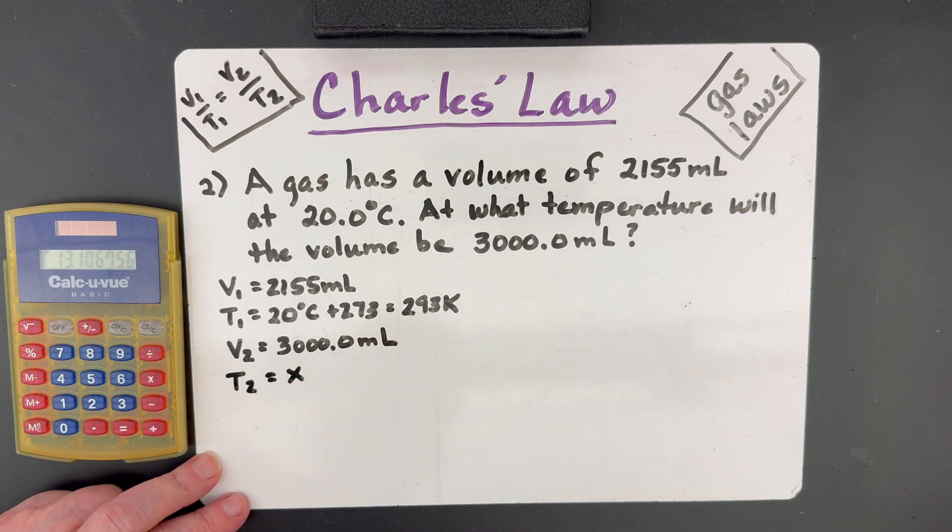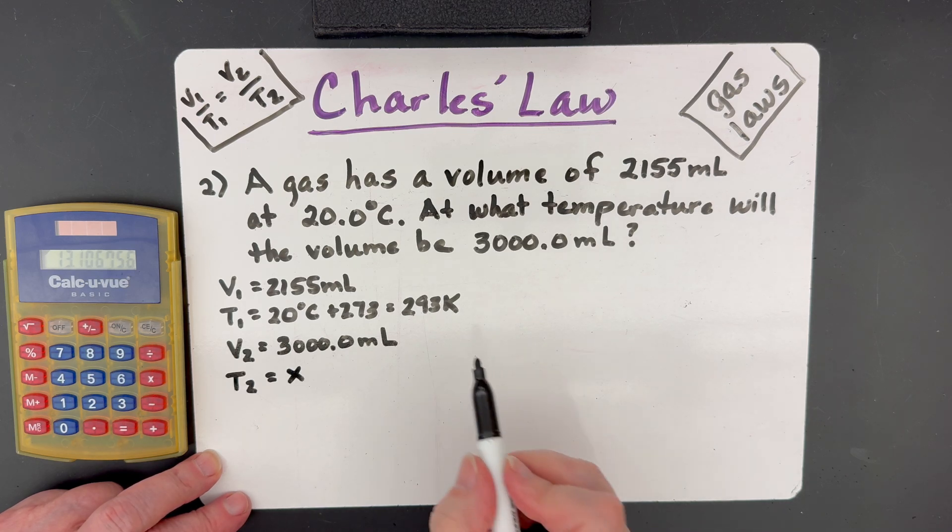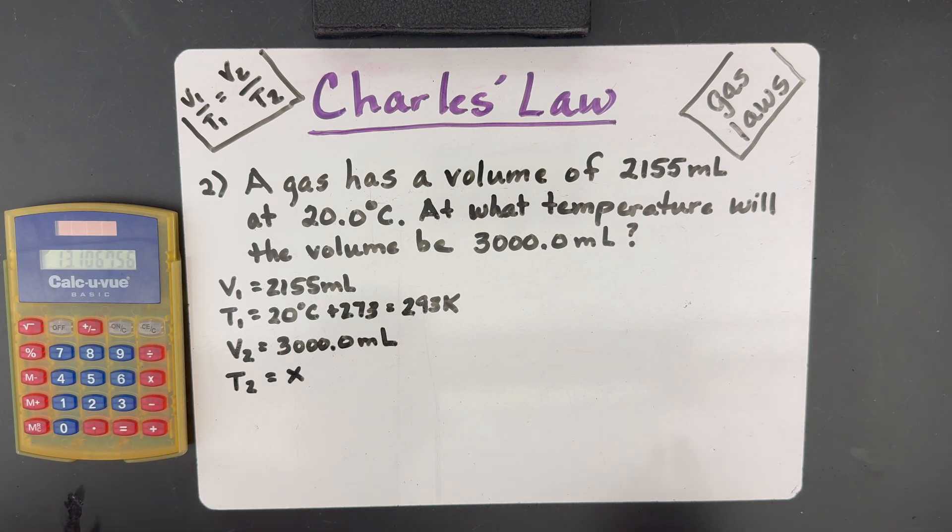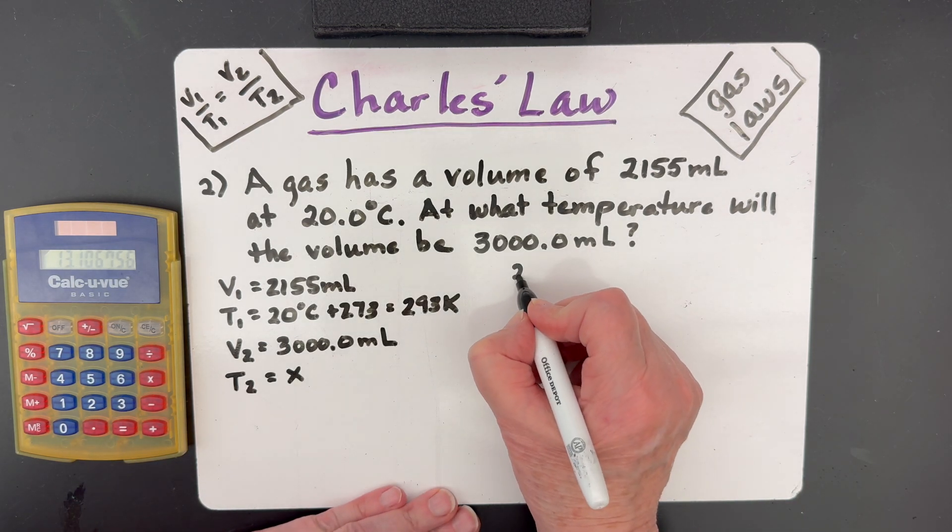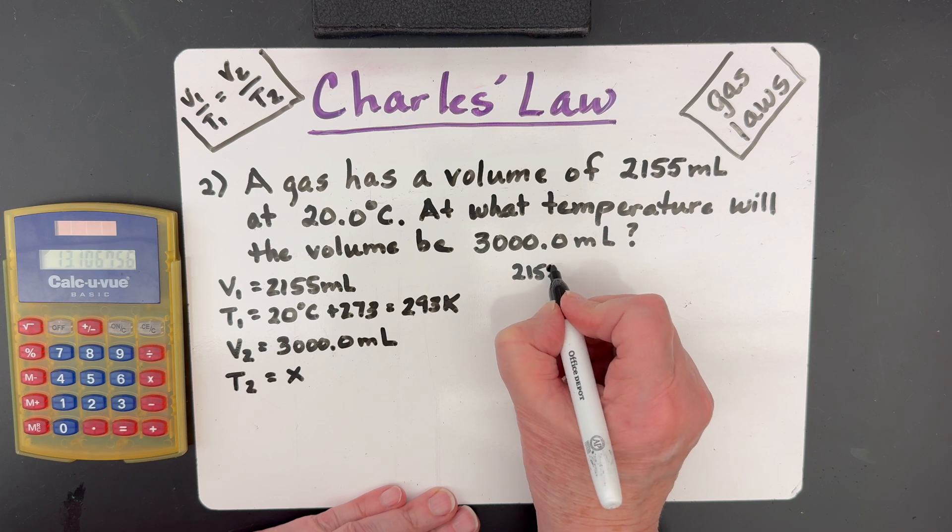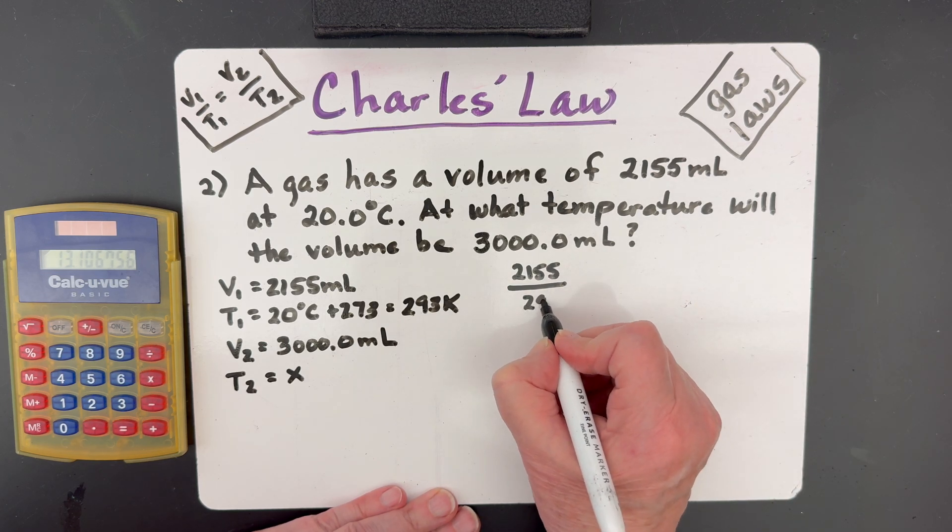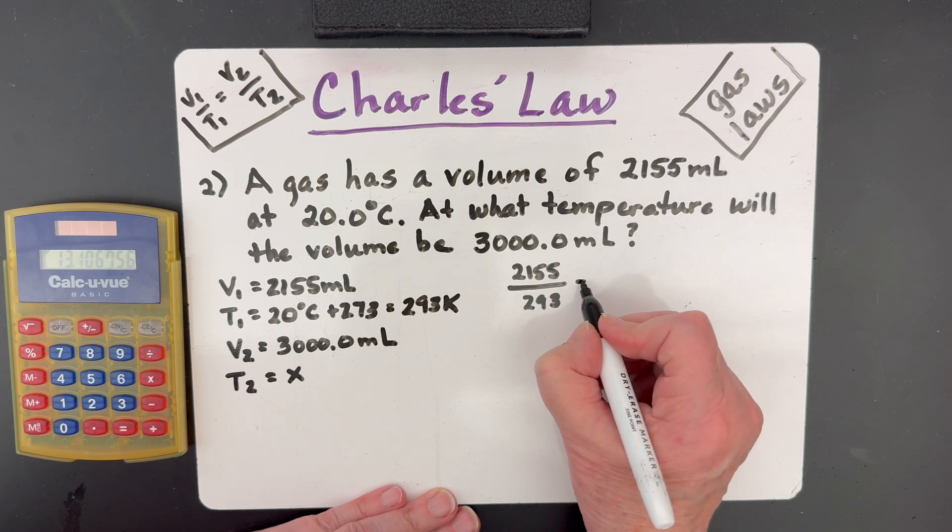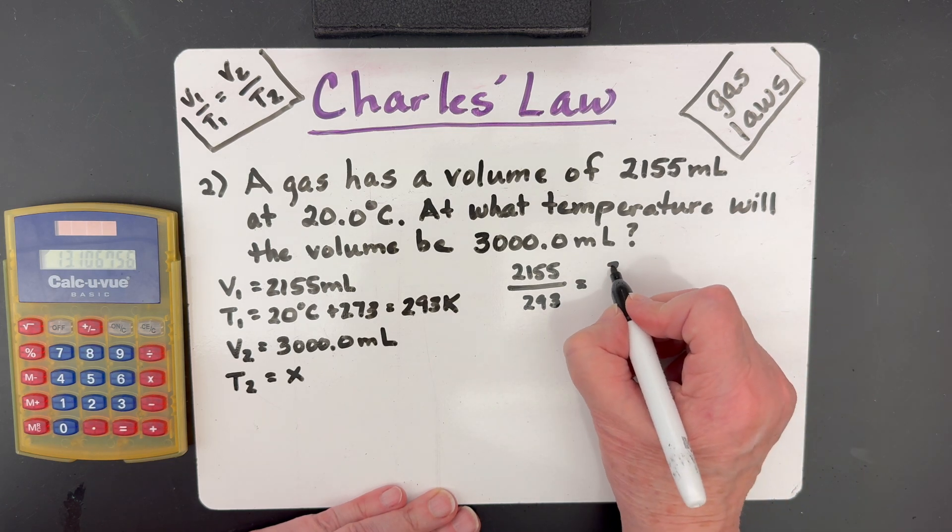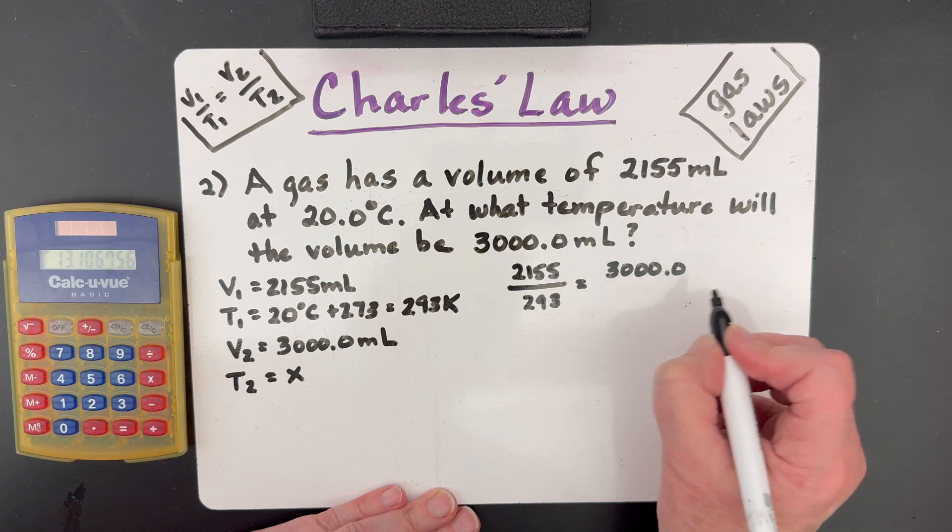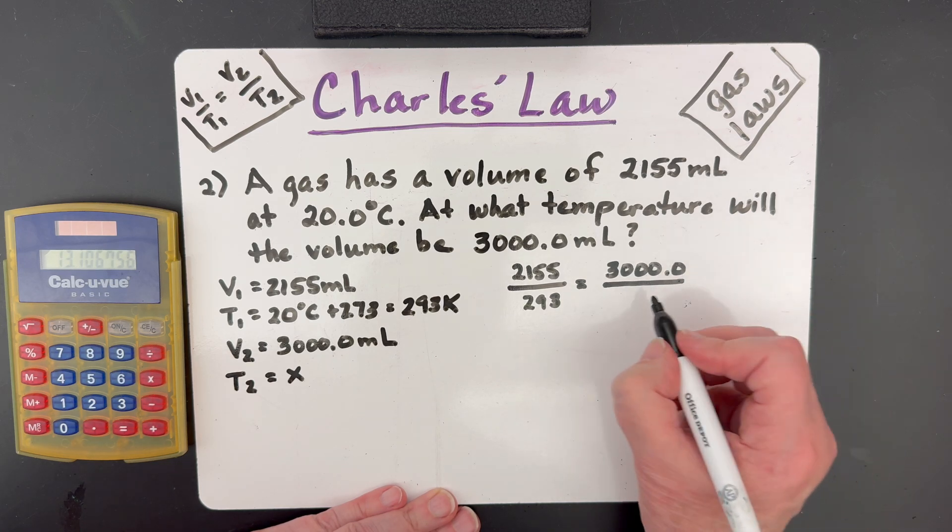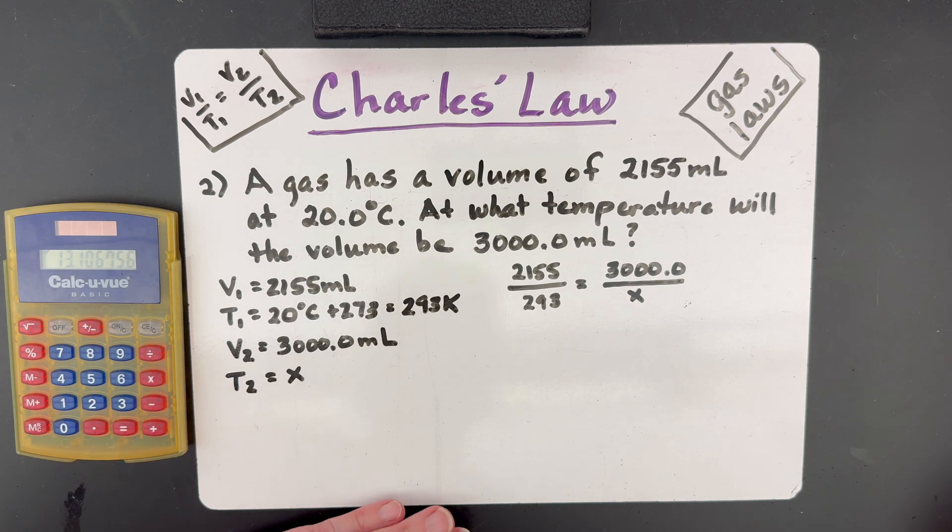And we are asked to find T2. So that is our X. And remember, because it's coming out of this gas law, it's going to be in Kelvin, just like our T1 is. So V1 is 2155, T1 is 293, V2 is 3000, and T2 is what we're trying to find.